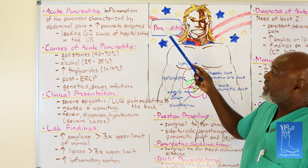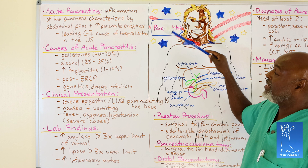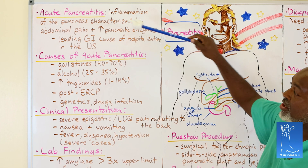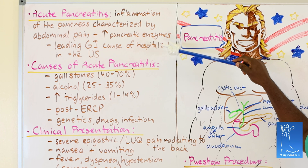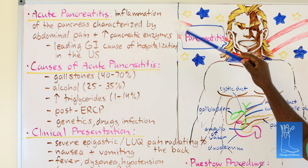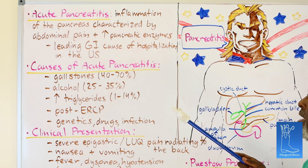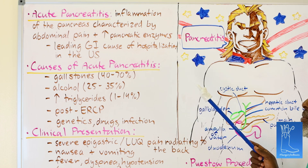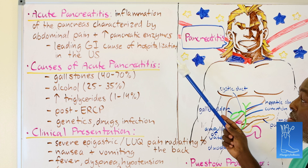Pancreatitis is inflammation of the pancreas characterized by abdominal pain plus an increase in pancreatic enzymes. It is the leading GI cause of hospitalizations in the United States. The majority of patients with acute pancreatitis — usually biliary pancreatitis due to their gallbladder — once their pancreatic enzymes come down, we take the gallbladder out and they go home. The key issue is getting them before they turn into chronic pancreatitis. Over the past 10–15 years we've realized we can't really treat chronic pancreatitis, so we must correct the problem during the acute phase.